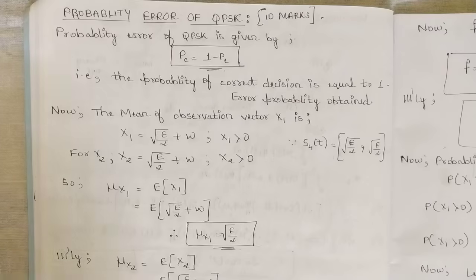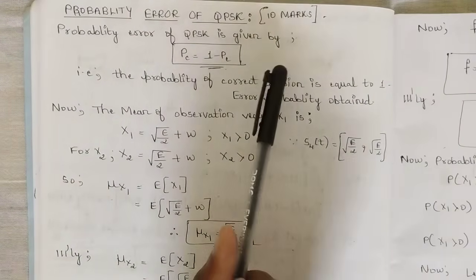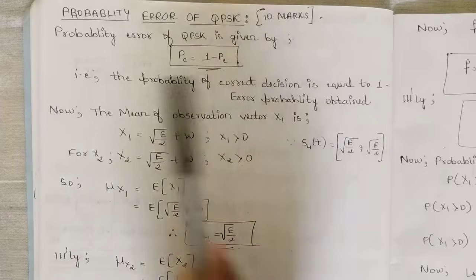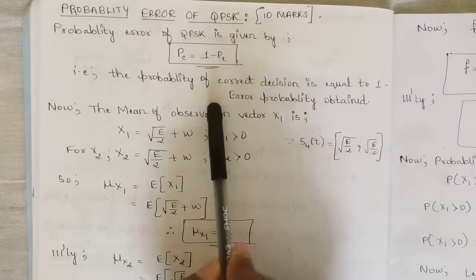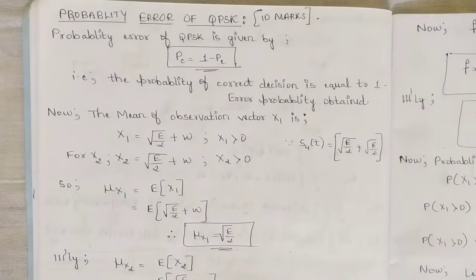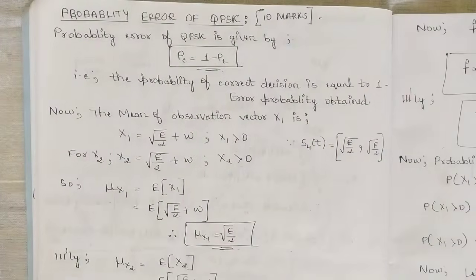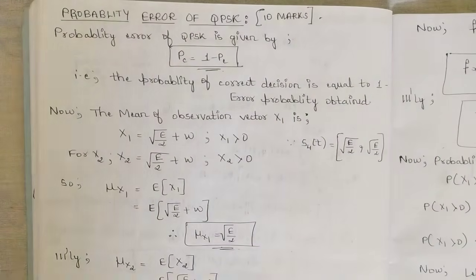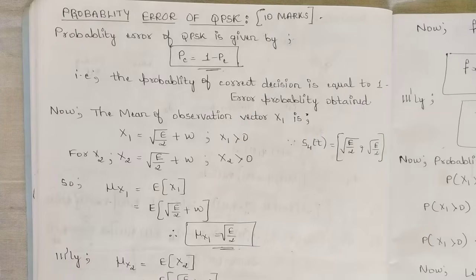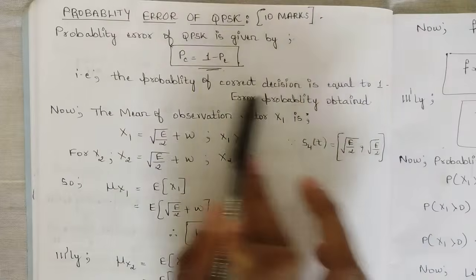Before starting, we need to know that the probability error in general for the QPSK signal is given by PC = 1 - PE, which indicates that the probability of correct decision is equal to 1 minus the error probability obtained. The error probability is correct if and only if the correct decision is taken after grouping of the quadrature signals. Since QPSK makes decisions in combinations of two bits, the correct decision matters a lot, and so the probability of correct decision equals 1 minus error probability.